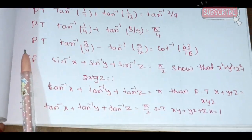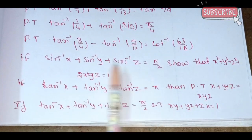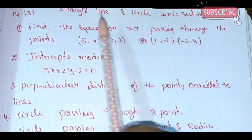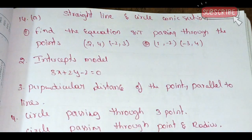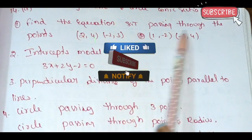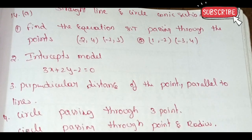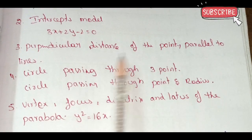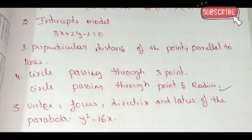Also: sin inverse x plus sin inverse y plus sin inverse z equals pi by 2 — choose new models. Question 12b is 5 marks. Next, questions 14a and b cover straight lines and circles — some students also choose trigonometry. Straight lines and circles are easy. This includes perpendicular distance, parallel lines, and circle passing through 3 points.